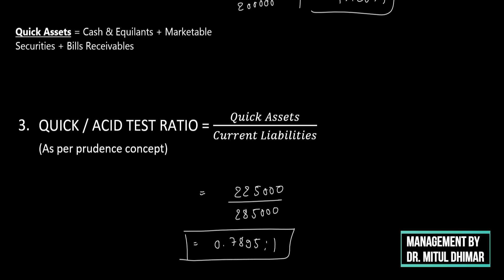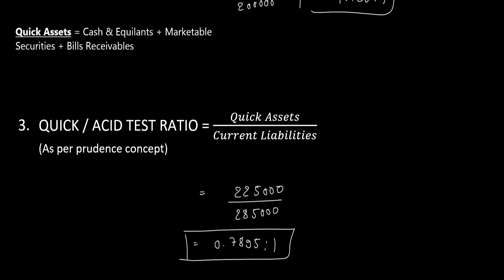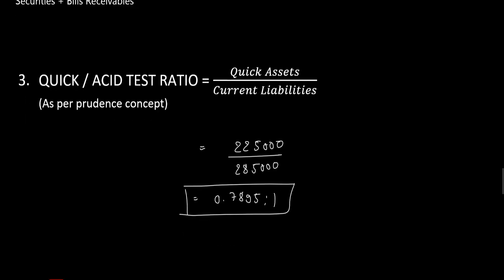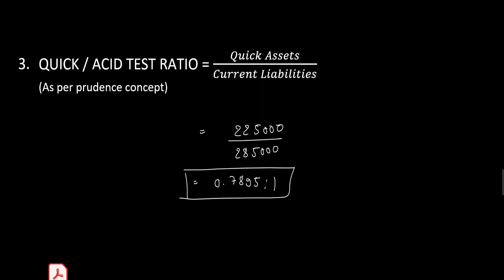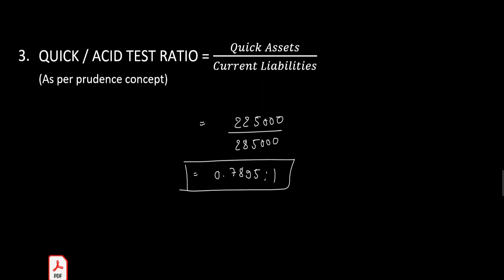These were the three liquidity ratios covered in this video: current ratio, liquid ratio, and quick ratio. Each tests the liquidity of a firm at a different level. That's it for today — see you in the next one, take care, bye.